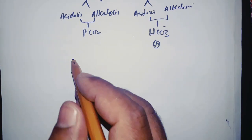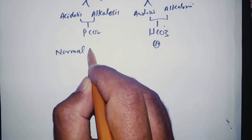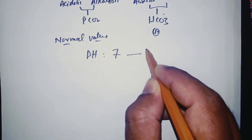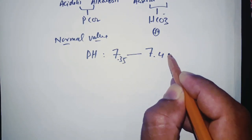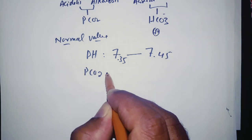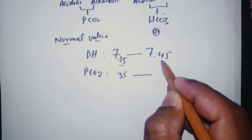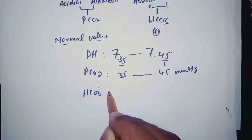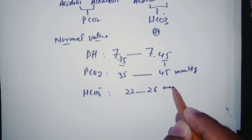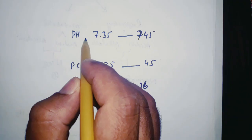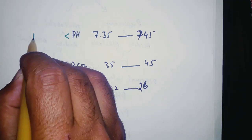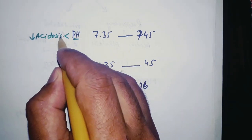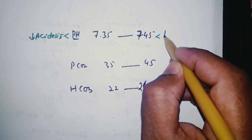The normal values are: pH 7.35 to 7.45, partial pressure of carbon dioxide (PCO2) 35 to 45, and HCO3 22 to 26. If the pH is less than 7.35 that is called acidosis, and if it is more than 7.45 that is called alkalosis.